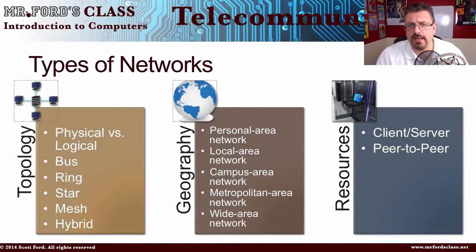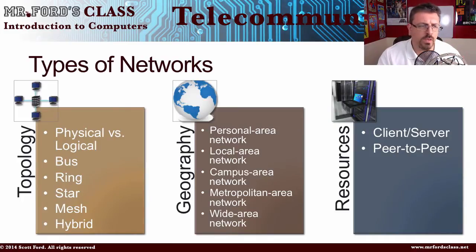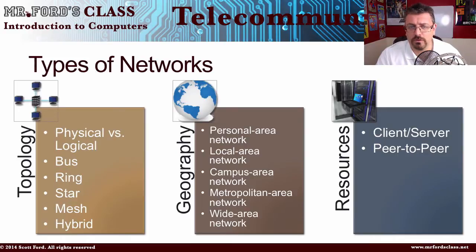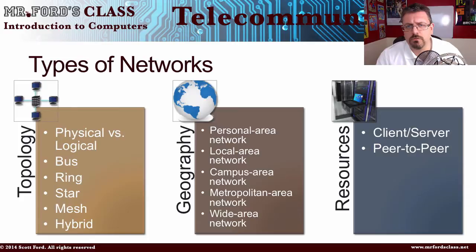We can classify networks based on three different concepts: topology, which is what they look like; geography, where they're located; and resources — in other words, how they share information. Let's first take a look at topology.